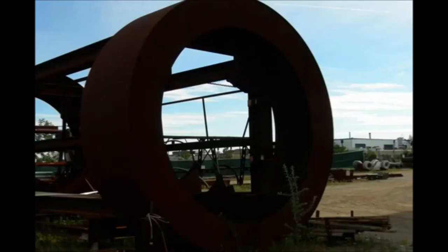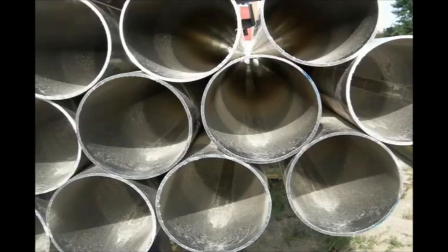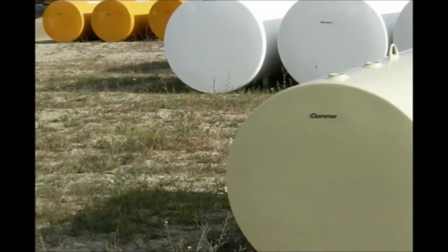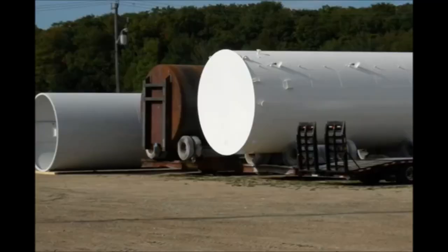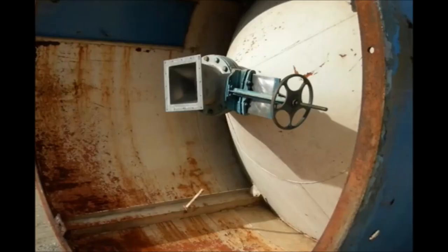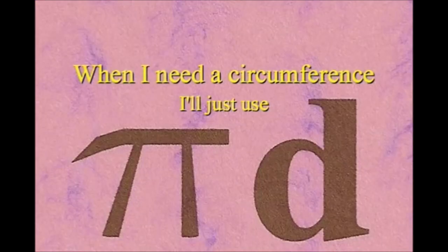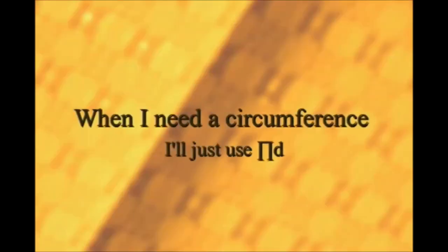It knows how to get around. It has a radius from center to rim. And its diameter's a line that goes from side to side while passing through the center, now isn't that simple. Pi r squared sounds like area to me, when I need a circumference, I'll just use pi d.